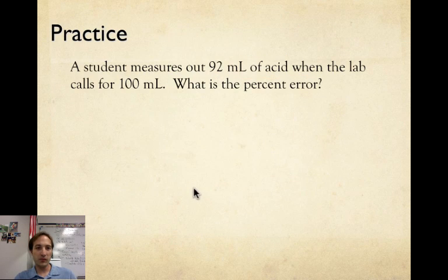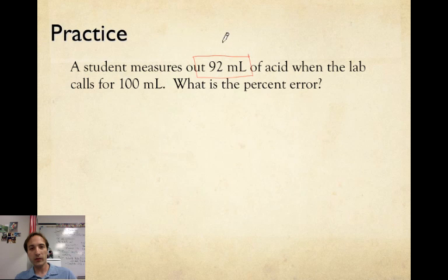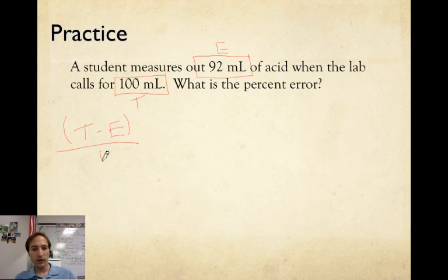Another example for you. A student measures out 92 milliliters of acid when the lab calls for 100 milliliters. What is the percent error? Well, let's identify again what theoretical and experimental are. In this case it says the student measures out. So that says that it did happen, that happened in the experiment. So I would say the 92 milliliters is the experimental value, and it says the lab calls for 100 milliliters. So that's the value that they were shooting for, that's the theoretical value. Now we want to know the percent error. So again, shorthand formula, theoretical minus experimental, all over theoretical times 100%. That's your setup. We've identified theoretical, we've identified experimental, plug them in, see what you can get for your answer, and I'll tell you if you got it right tomorrow.